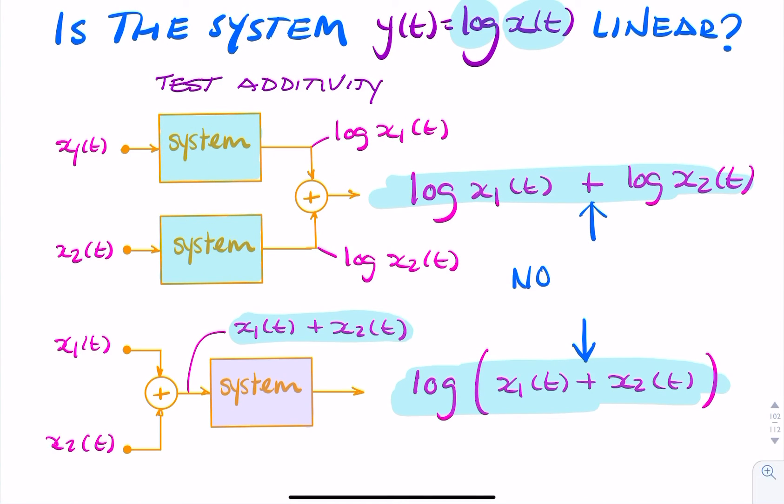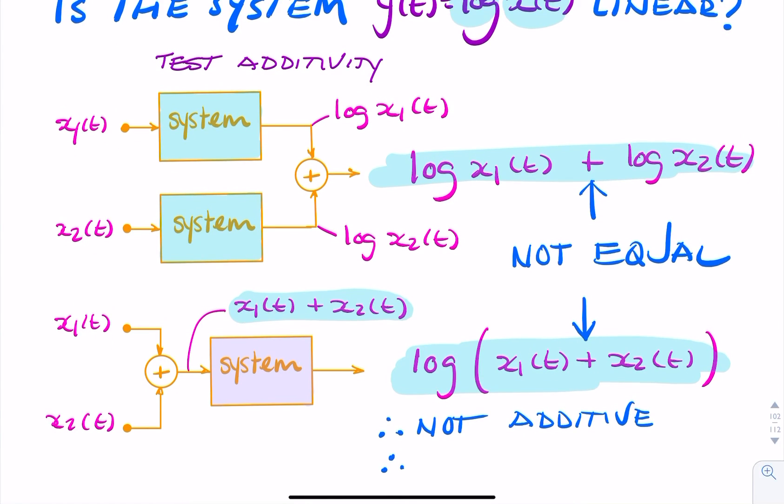These are not equal, so therefore the system has failed the test of additivity. So it's not additive, and therefore we can say it's a non-linear system.